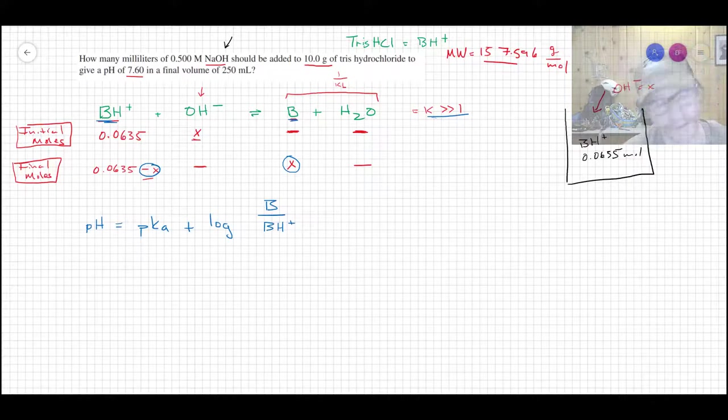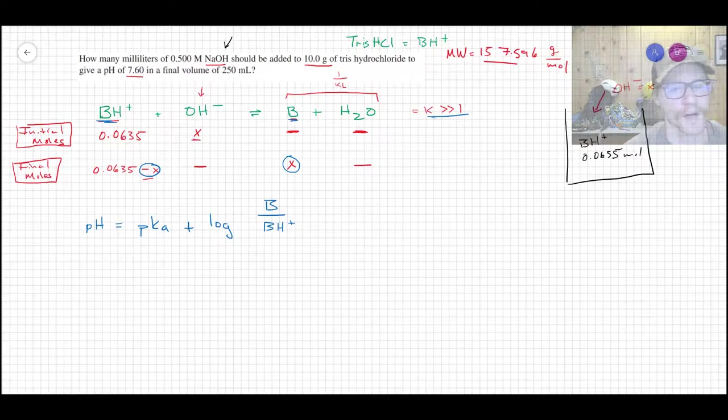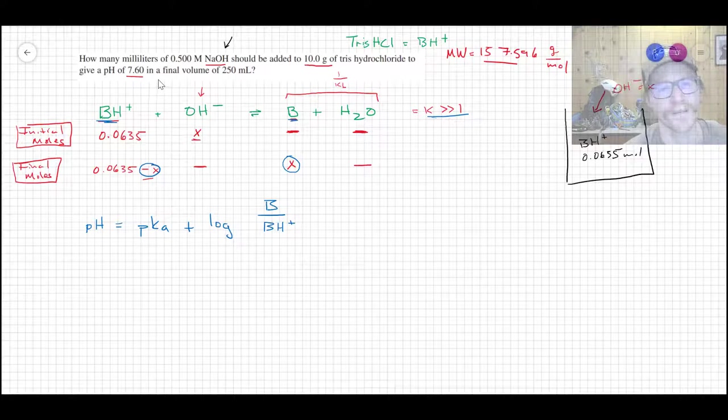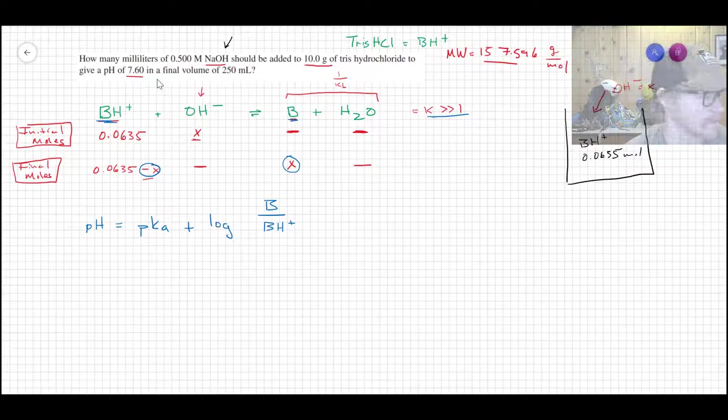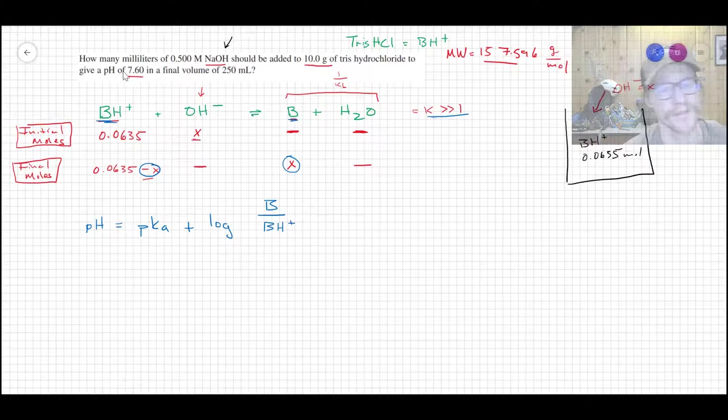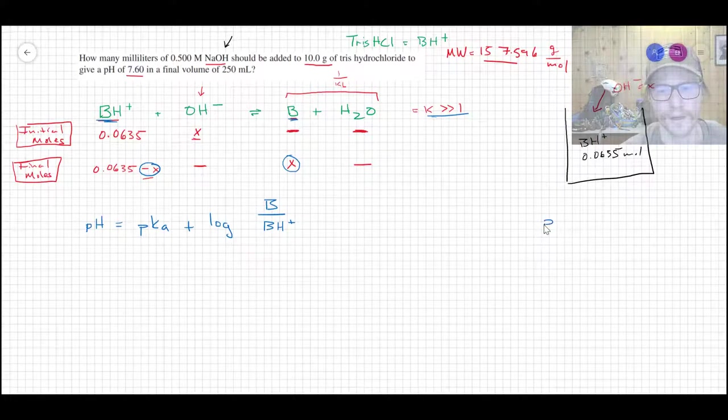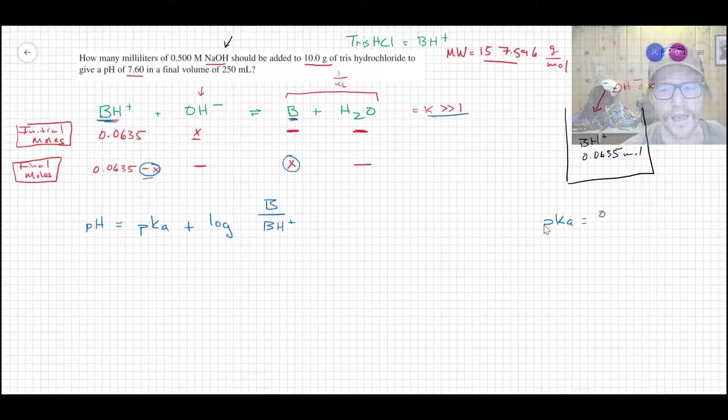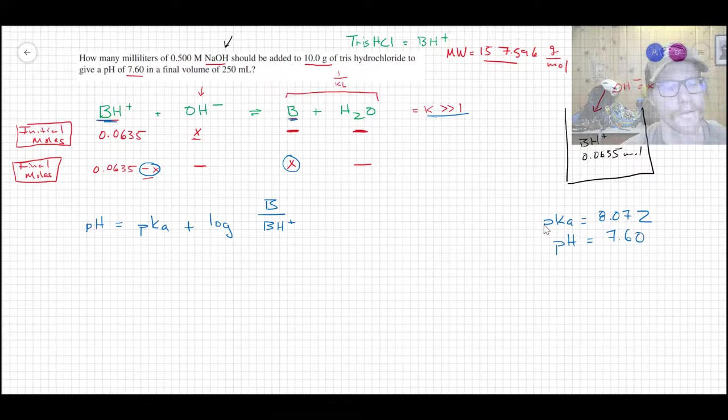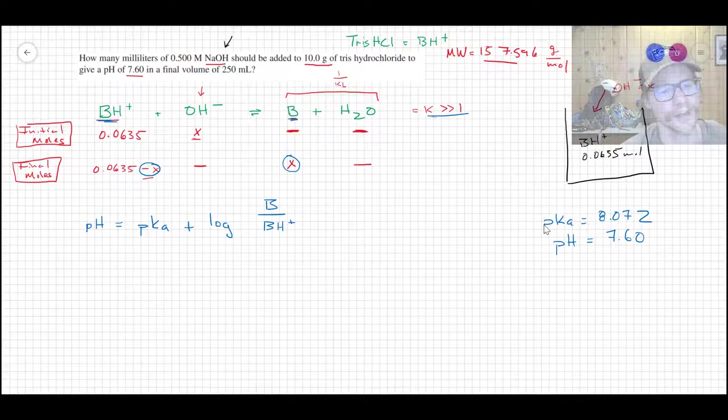This is simply just to keep track of how much of the BH+ gets destroyed and in return, how much of the B gets created. So then we just need to throw this stuff into the Henderson-Hasselbalch equation. We have the pH. We know the pKa from the previous problem, which was 8.075. Your book uses 8.072. So I'll use 8.072 in this problem.